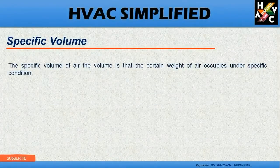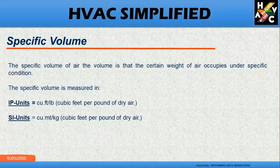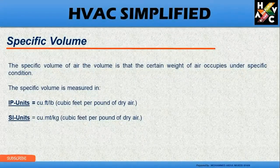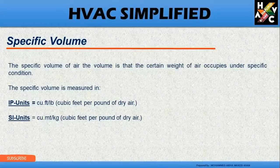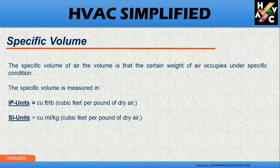The specific volume of air is the volume that a certain weight of air occupies under specific conditions. In IP units it is measured in cubic feet per pound, and in SI units in cubic meters per kilogram. The specific volume is the volume of air at any given dry bulb temperature. Remember: the lower the dry bulb temperature, the lower the specific volume; the higher the dry bulb temperature, the greater the specific volume, allowing more moisture content to be held.